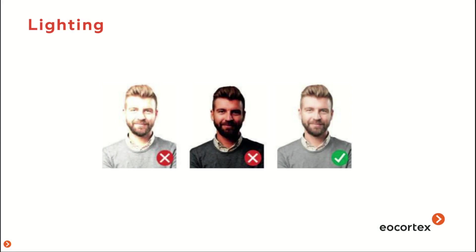The second critical factor is the quality of illumination. A camera will not be able to recognize a face in the dark regardless of picture quality. If a shadow appears on a person's face, the system simply won't be able to recognize them. Illumination should be uniform and constant — this is very important.